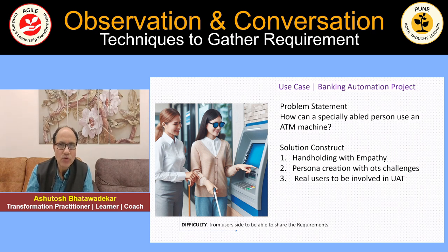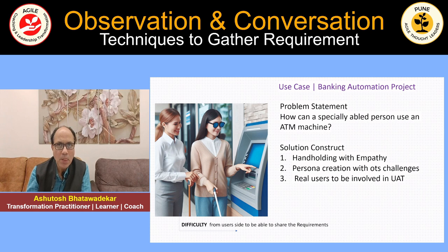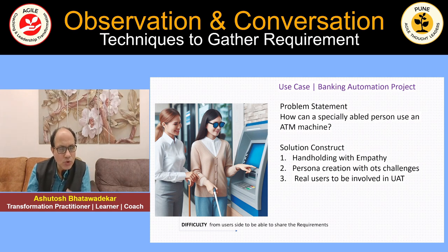So how do we use observation and conversation to gather these requirements? One of the ways is you have a real person working along with this visually impaired person, trying to help him or her navigate through the ATM machine. When you're doing this, you're actually trying to empathize with that person — putting yourself into the shoes of the customer and trying to figure out what challenges this person could be facing, what could be the do's and don'ts to take care of, and how to design the product so that even this person can use it. This is where we create a persona for this kind of user.